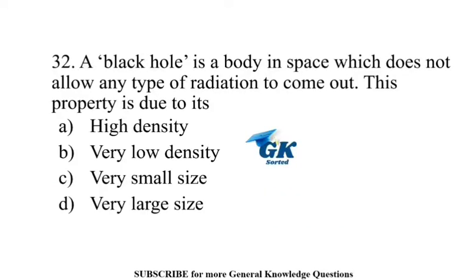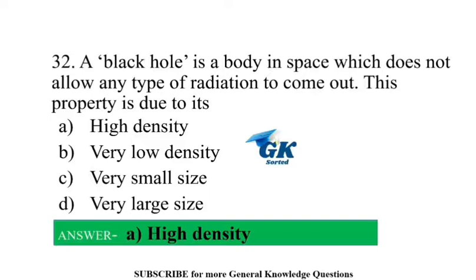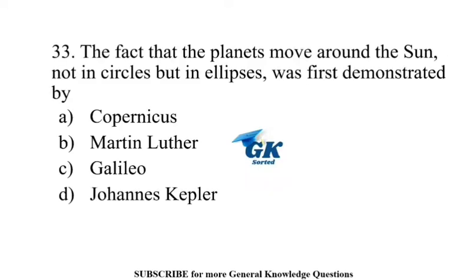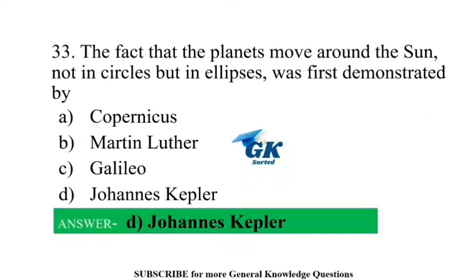A black hole is a body in space which does not allow any type of radiation to come out. This property is due to its high density. The fact that the planets move around the sun not in circles but in ellipses was first demonstrated by Johannes Kepler.